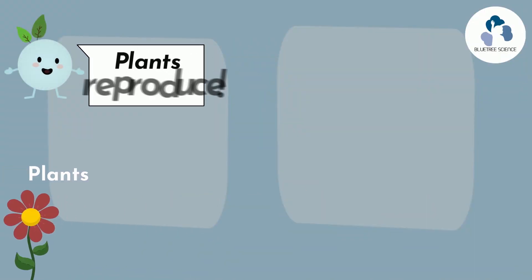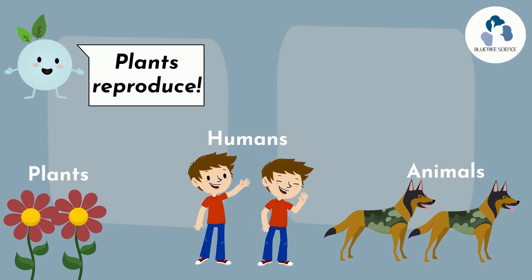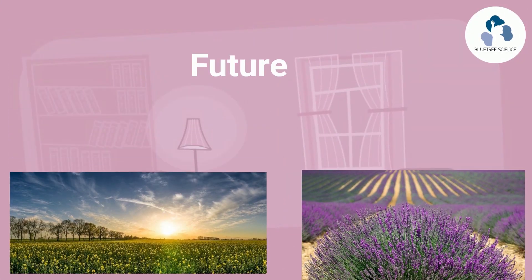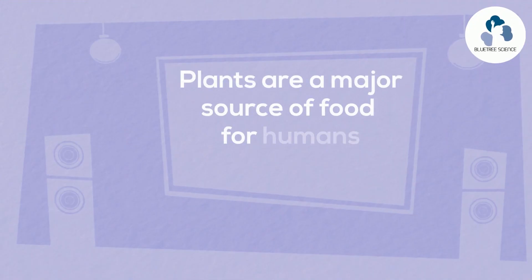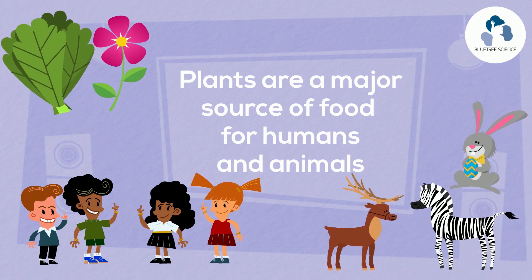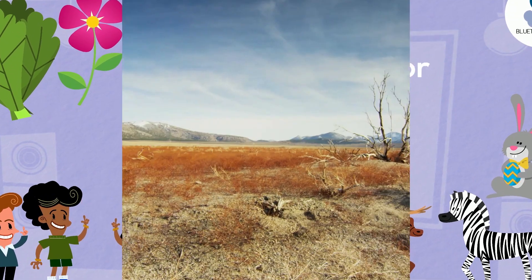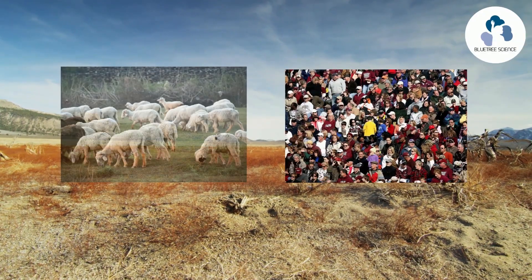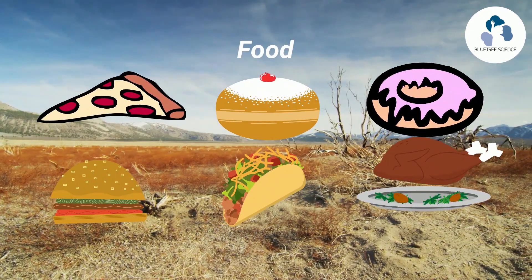Plants reproduce just like humans and animals to make more of themselves. Plant reproduction is not just important in continuing the future of the population of plants, but also in the continuing of the population of humans and animals that rely on plants and vegetation as the primary food source. Without plants, humans and animals will not survive as they are not able to make their own food.